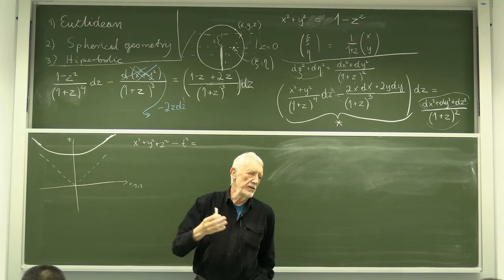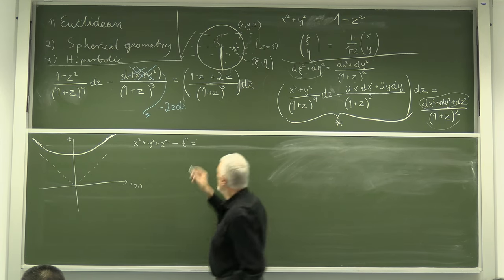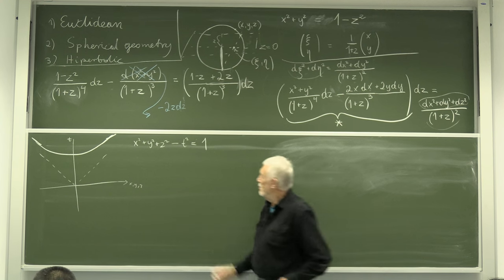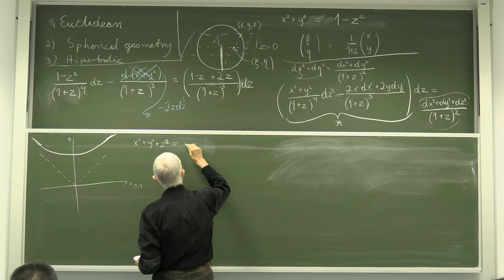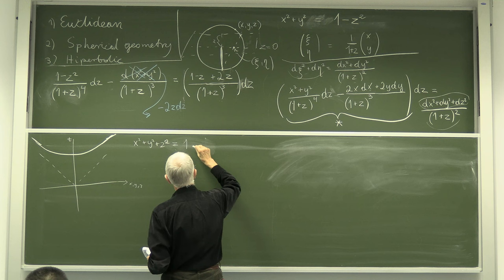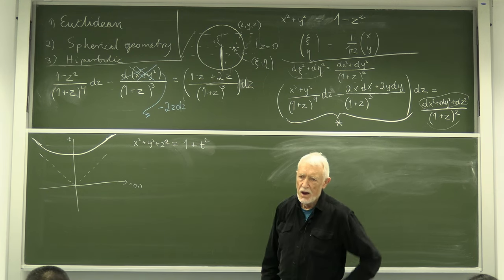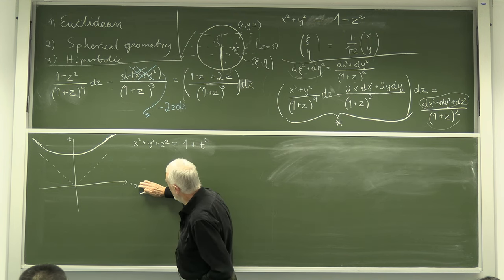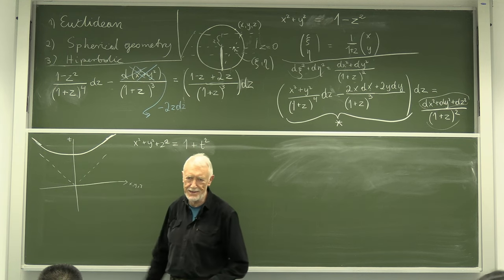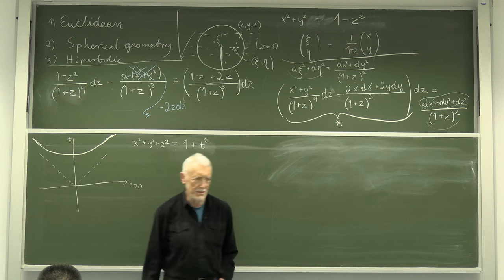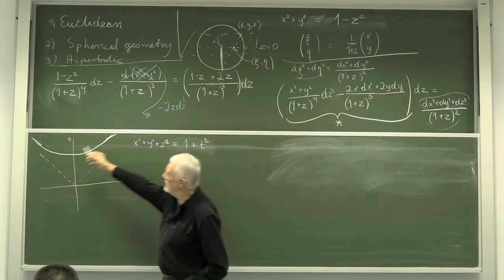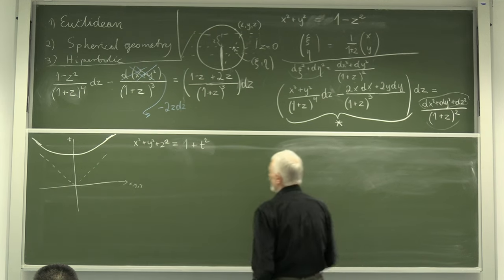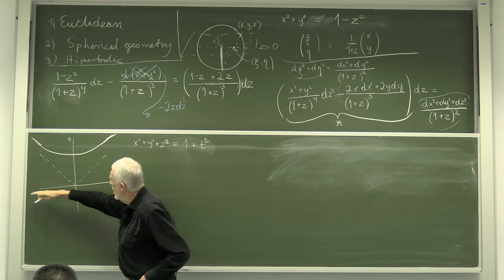This constant can be 17 as before, but I will just put 1. This is similar to the spherical example, except instead of plus we have minus, which makes a big difference. Here t represents the same role as z did, the only difference being that the geometry is not Euclidean but pseudo-Euclidean Minkowski geometry.